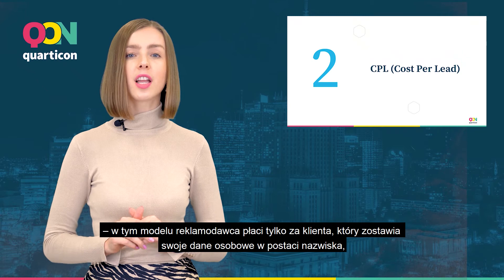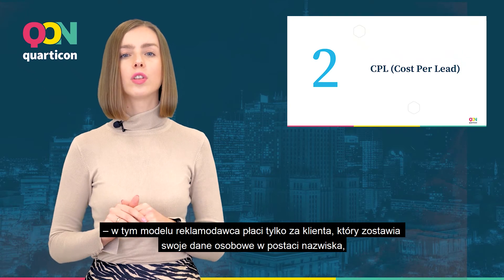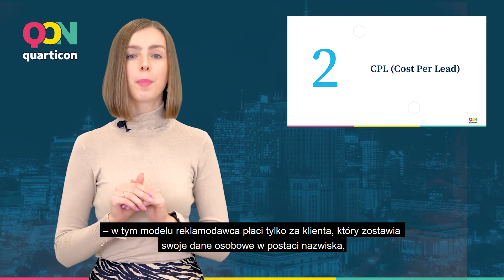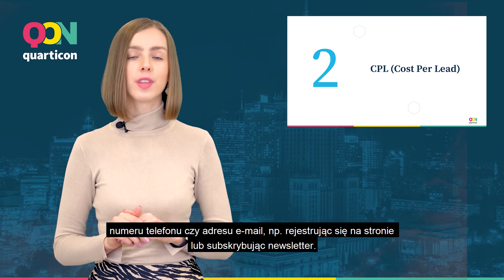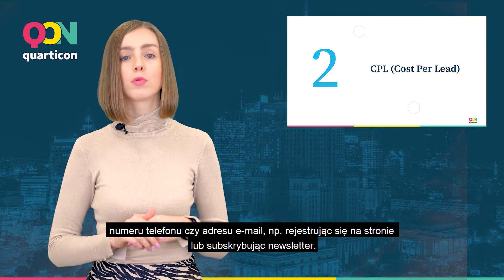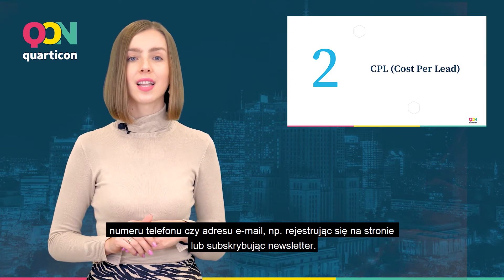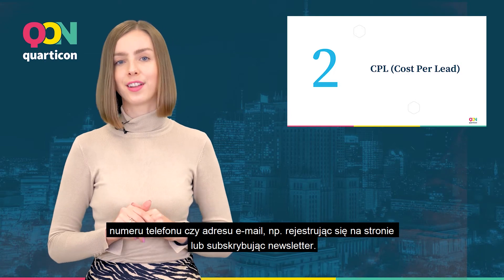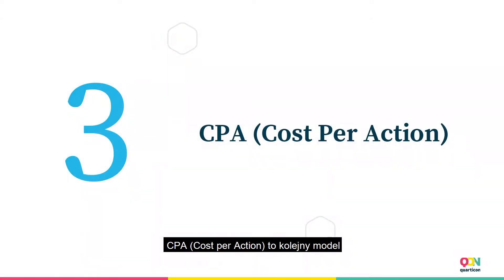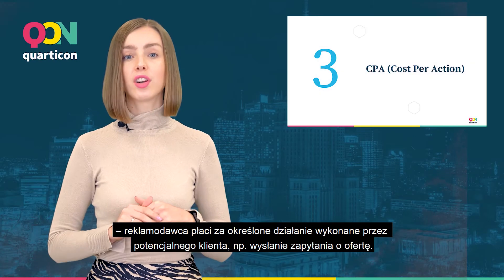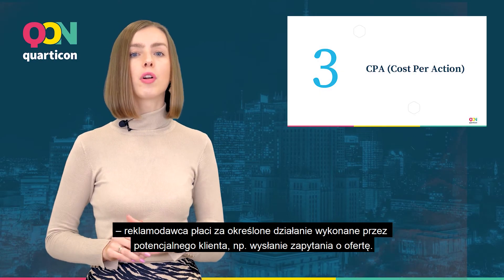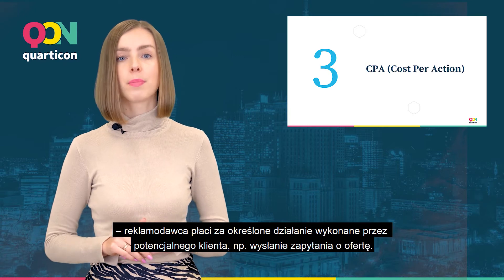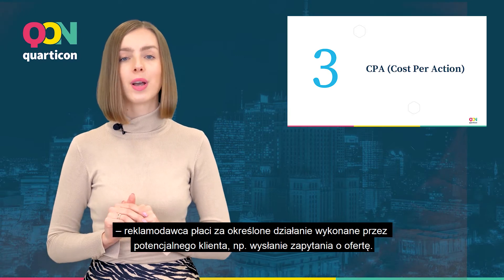In the CPL model, the advertiser pays only for the customer who will leave their personal data in the form of a name, phone number, or email address — for example, registering on the site or subscribing to the newsletter. CPA, cost per action, is another model. It allows an advertiser to pay for a specified action from a prospective customer, for example sending a request for an offer.